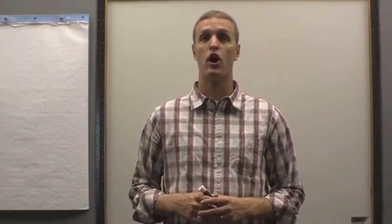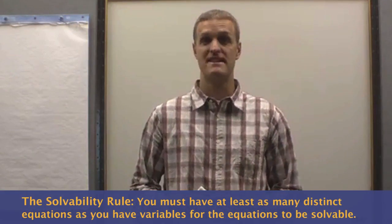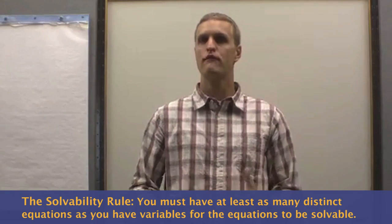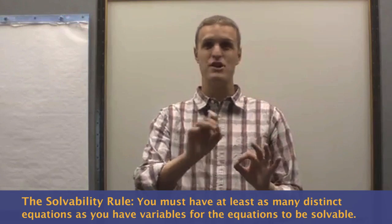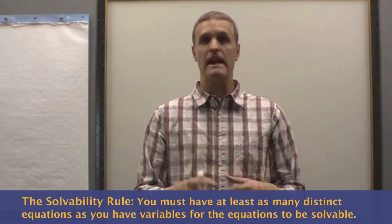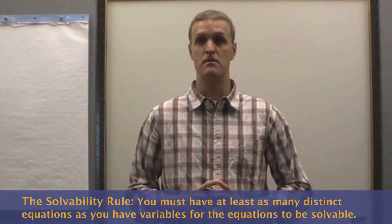The tip for this week is what we call the solvability rule. And the solvability rule simply says this: that in order for an equation to be solvable, you must have as many distinct variables as you have equations if those equations are to be solved.